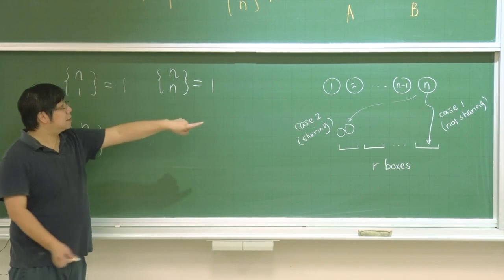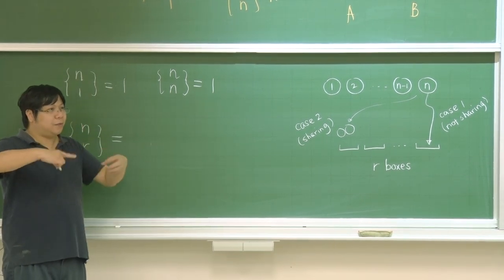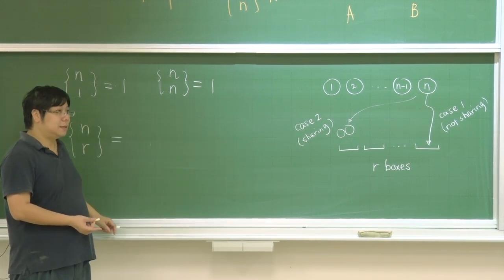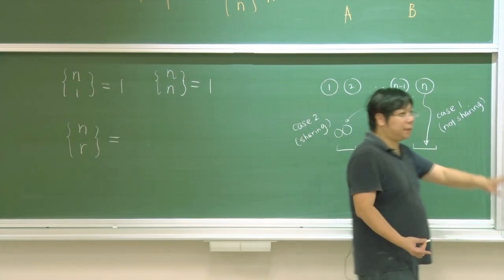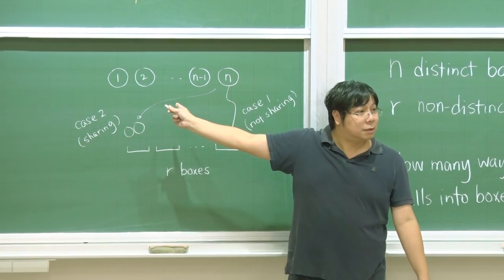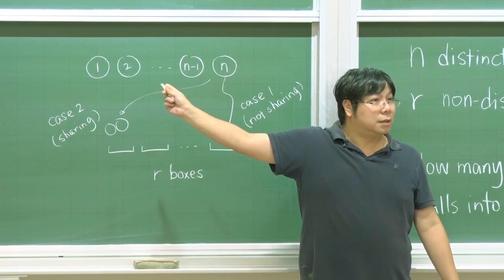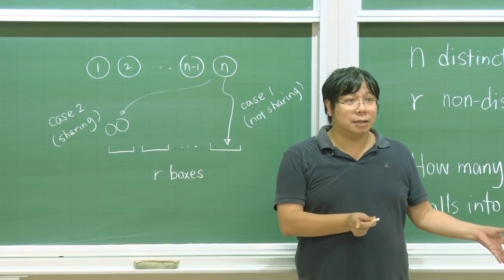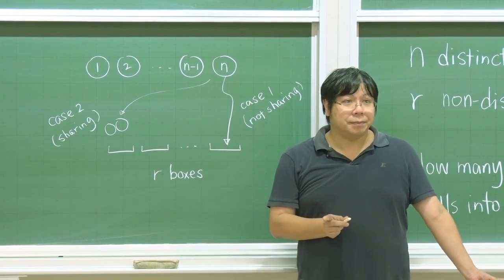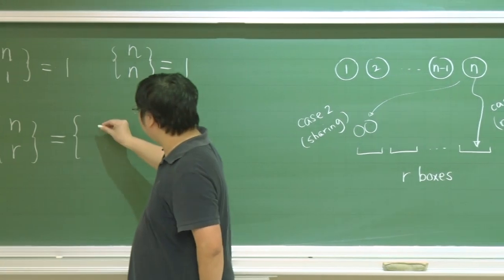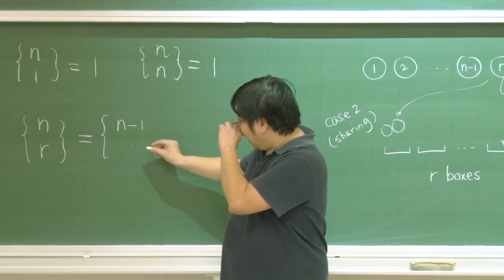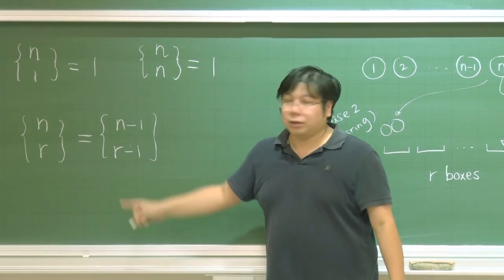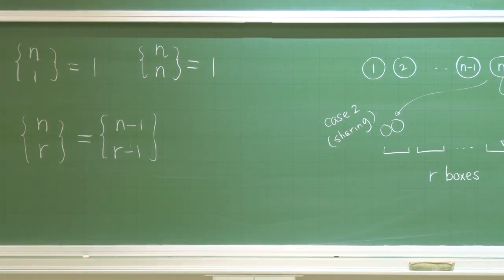Let's do case one first. If ball n does not share with others, what happens to the remaining balls? They have to be distributed among the rest of the boxes. There are r minus 1 remaining boxes. So the number of ways for case one must be equal to the number of ways to distribute the n minus 1 balls into r minus 1 boxes, which is N(n-1, r-1).